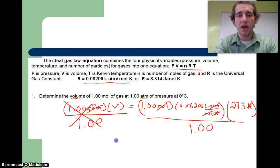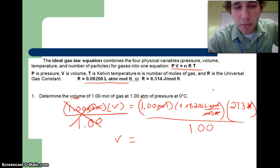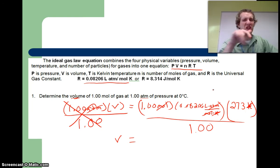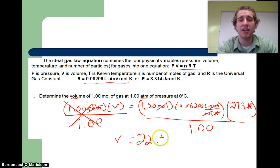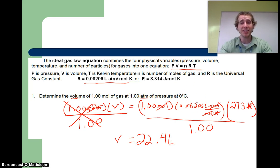Now we can go ahead and plug in all these numbers on the right side. Take a minute, plug those in for me. You're gonna find something interesting: 22.4 liters. Go back, checking conditions. We had 1 mole at 1 atmosphere, 0°C. That's STP conditions. That's where it comes from.